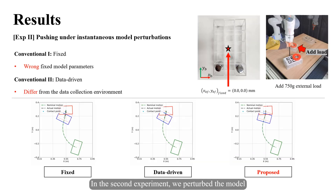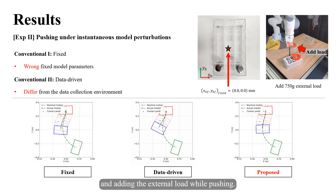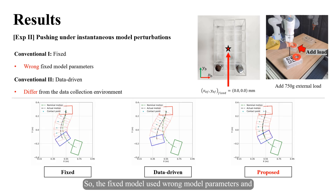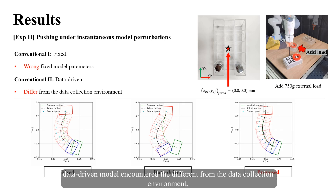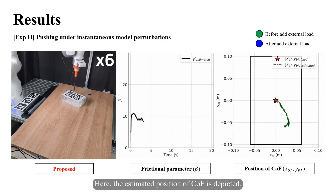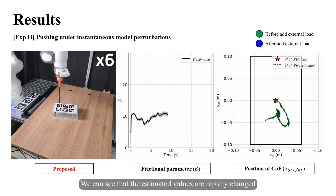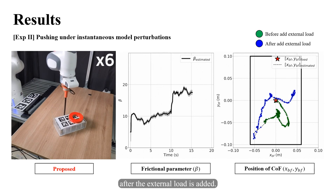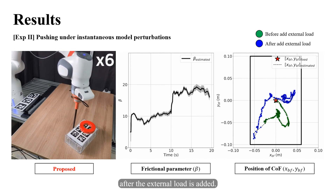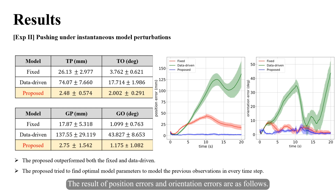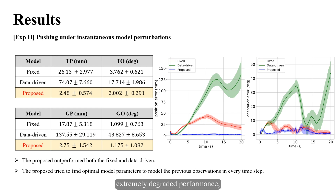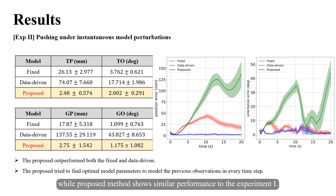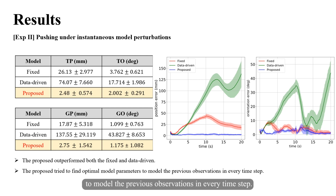In the second experiment, we perturbed the model by rearranging the internal loads and adding an external load while pushing. The fixed model uses wrong model parameters and the data-driven model encounters conditions different from its data collection environment. The estimated position of the center of friction is depicted, and we can see the estimated values rapidly change after the external load is added. The fixed model and data-driven model show extremely degraded performance, while the proposed method shows similar performance to experiment one, verifying that it can rapidly adapt under instantaneous model perturbations.